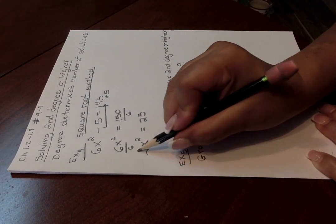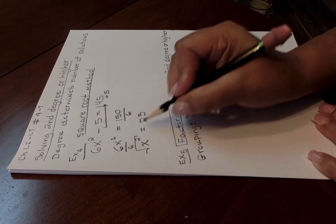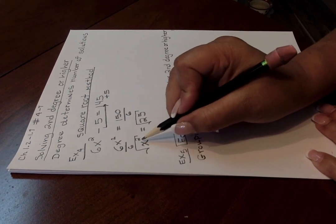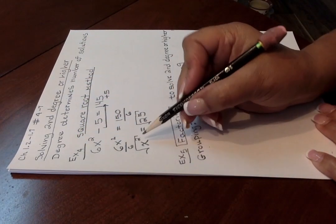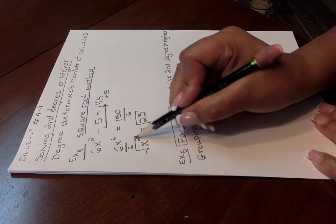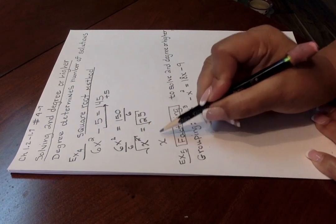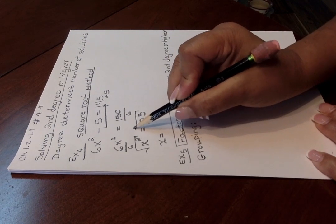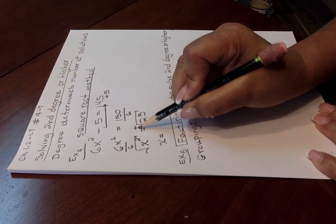Then once you've isolated the square term, you can take the square root of both sides. Since it's second degree, the degree does determine the number of solutions. You're going to need two solutions. Taking the square root of x squared wipes out the square, leaving you with x, and in order to get the two solutions, you're going to have to report both the positive and the negative solution.